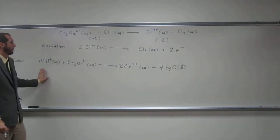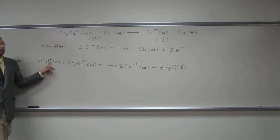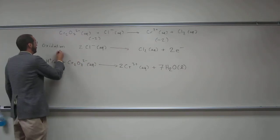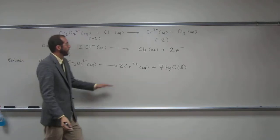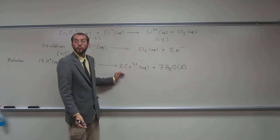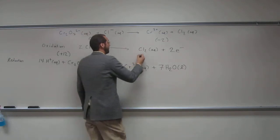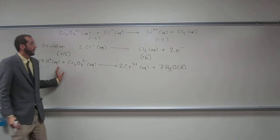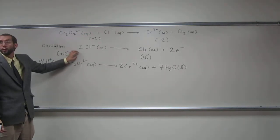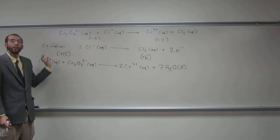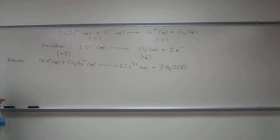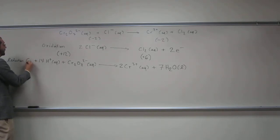Let's look at the reduction half-reaction. We've got 14 H⁺'s minus two, so overall that's going to be a plus twelve. Over here we've got three times two, which is plus six. So in order to make this charge balance, we're going to have to remove six pluses from here — or in other words, add six negatives. Because we're adding electrons, that's how we do this. So we're going to add six electrons here.